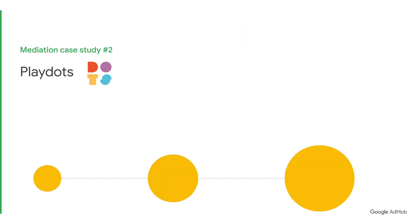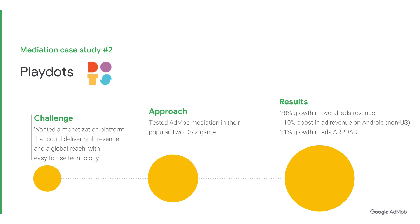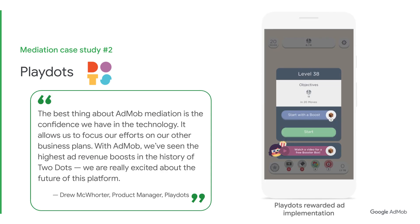The second story is from PlayDots, a creative company focused on making games everyone can enjoy. They wanted a monetization platform that could deliver high revenue and a global reach with easy-to-use technology. PlayDots tested mediation in their popular 2Dots game. They observed AdMob's performance in overall revenue, eCPM, and ARPDAL for over 180 days, and compared AdMob to their previous mediation solution. PlayDots saw 28% growth in overall ad revenue, a 110% boost in ad revenue on Android and non-US markets, and 21% growth in ads ARPDAL. Drew McHorder, a product manager from PlayDots, noted that the best thing about AdMob mediation is the confidence they have in the technology — it allows them to focus their efforts on other business plans, and they've seen the highest ad revenue boosts in the history of 2Dots.